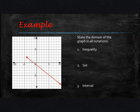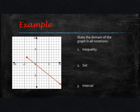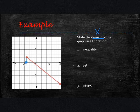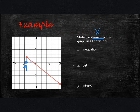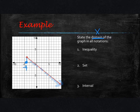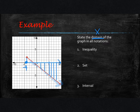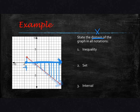Let's look at an example. We're going to state the domain of the graph in all three notations. Since we're doing the domain, we need to point out that these are just the x values. If I look at the left side of my graph and bring it down to the x-axis, it has a solid point at negative 4. Following it over to the right side, you can see there is an arrow, meaning the x values go on forever to the right.